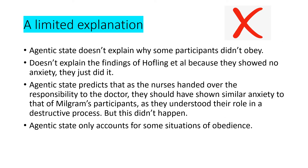A limitation of the agentic state explanation is that it is a limited explanation. The agentic state doesn't explain why some participants didn't obey in Milgram's study, and it also doesn't explain the findings of Hofling, because the nurses showed no anxiety — they just did it. 21 out of 22 nurses obeyed and gave the drug to patients because they were instructed by doctors. The agentic state explanation predicts they should have shown similar anxiety to Milgram's participants, as they understood their role in a destructive process, but that didn't happen. Therefore agentic state only accounts for some situations of obedience, not all.